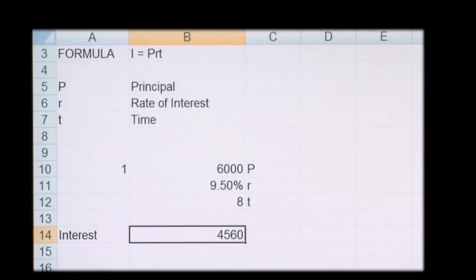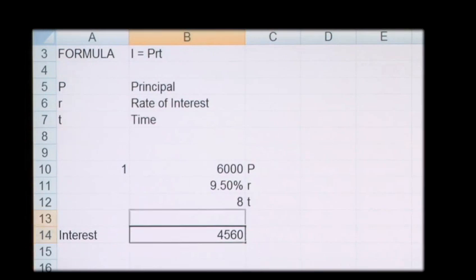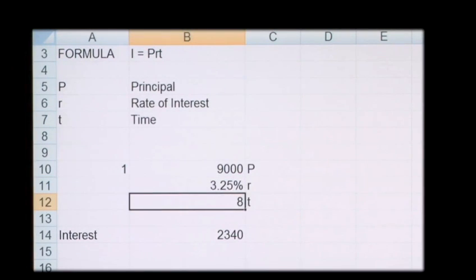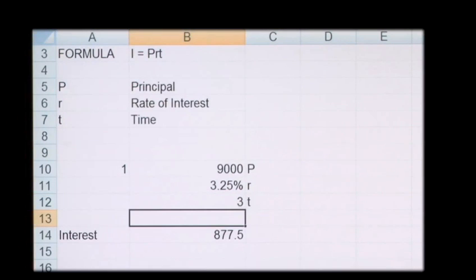A second example: we're determining the total amount of interest earned if we had £9,000, earning 3.25% interest per year for only 3 years. The interest amount here would be £877.50.